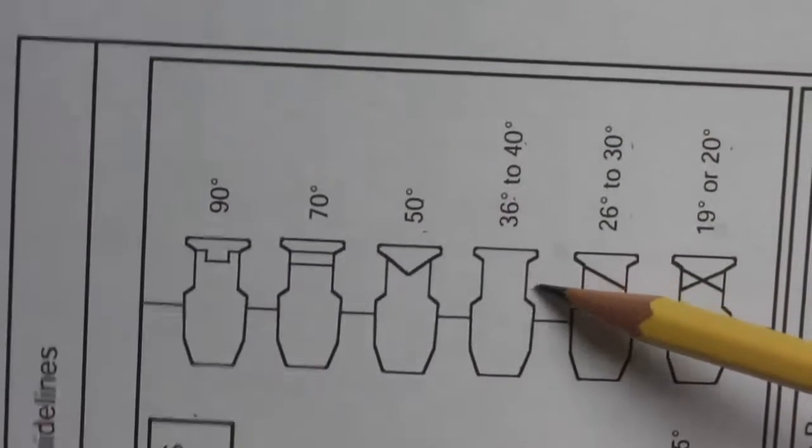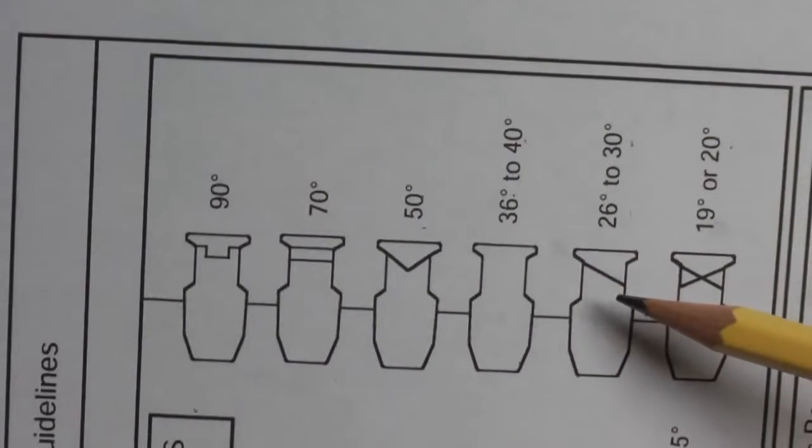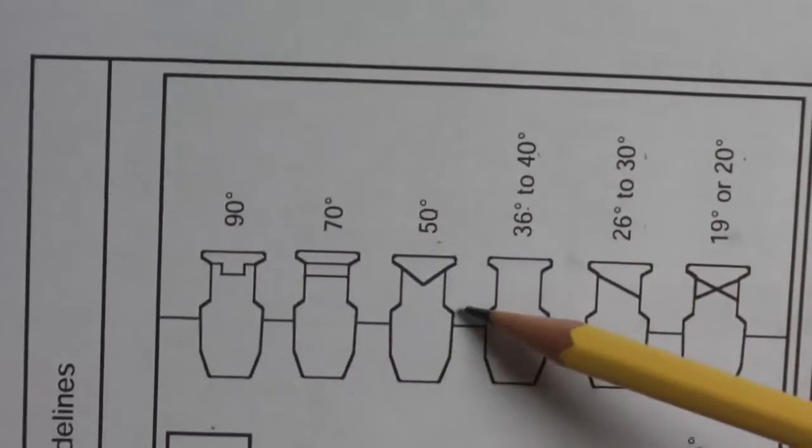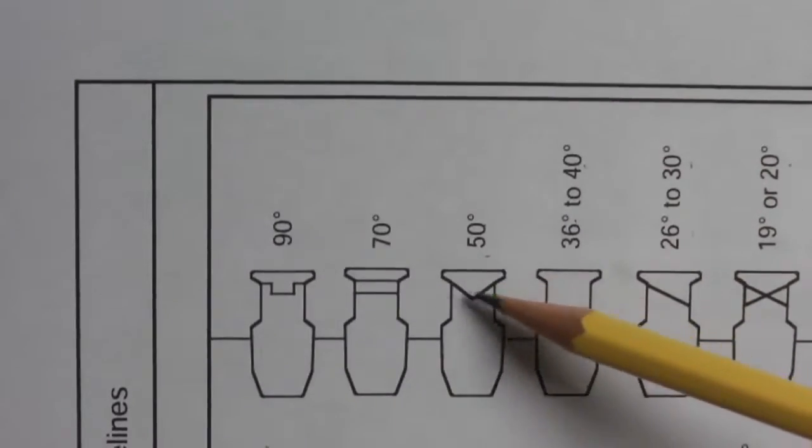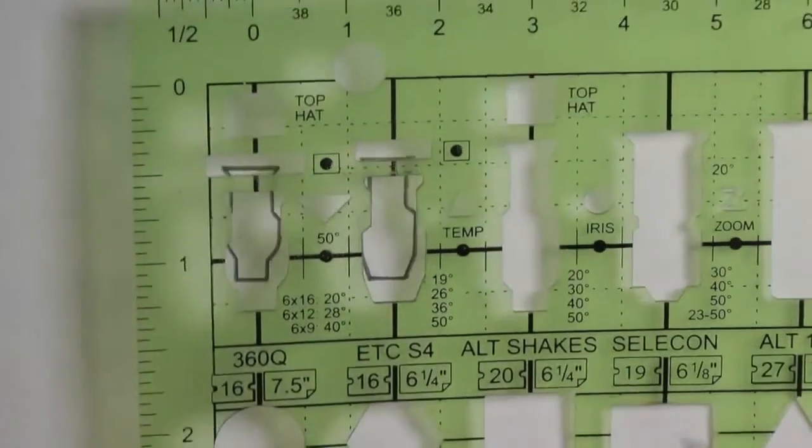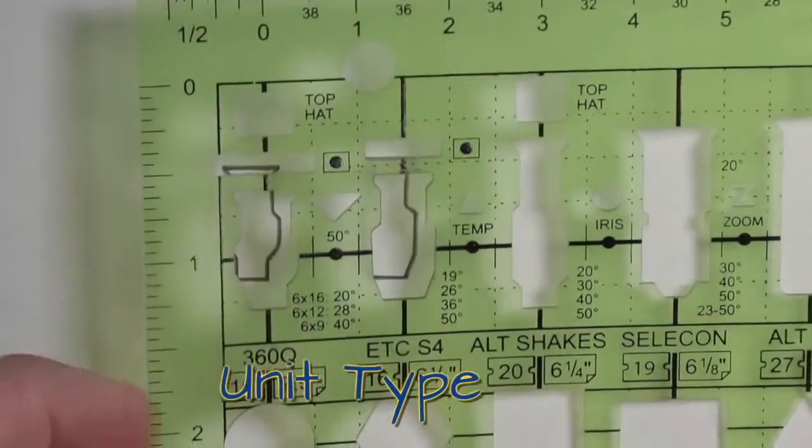That was the empty one. And now, in order to change it from a 36 to 40 degree unit into a 50 degree unit, I need to put that V in there. And on this template, we happen to have a V right between the two units.